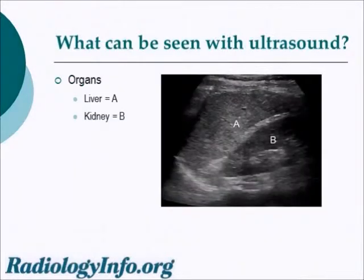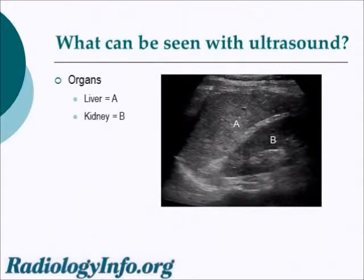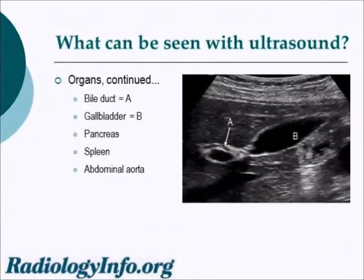What can be seen with ultrasound? Well, organs like the liver and kidney depicted in this image. The liver is shown as the object on the top left of the screen, labeled A, and the right kidney as B. We can also see the bile duct, the gallbladder, pancreas, spleen, and abdominal aorta. In this image, the gallbladder is labeled B, and the bile duct is labeled A.